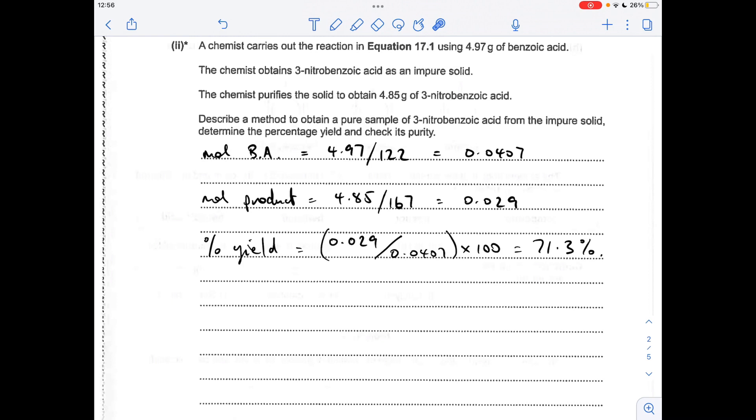With 100% yield, we should make 0.0407 moles of product. So for percentage yield, it's the actual moles we made divided by the theoretical moles, times 100, which gives us 71.3%.